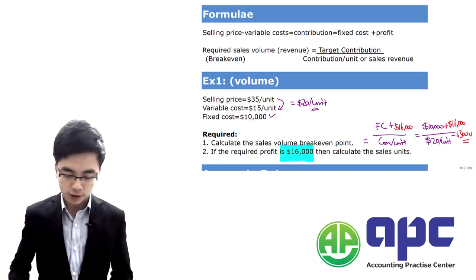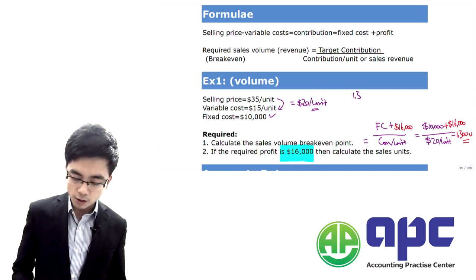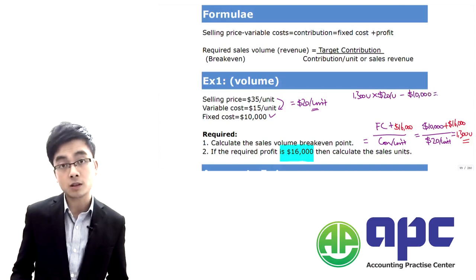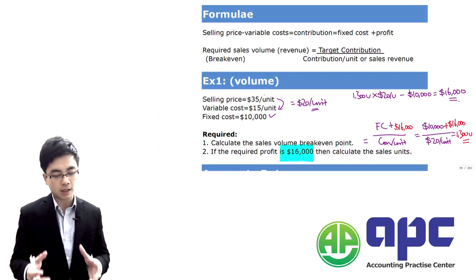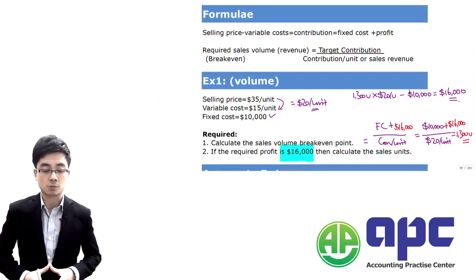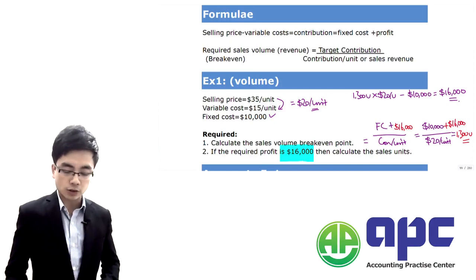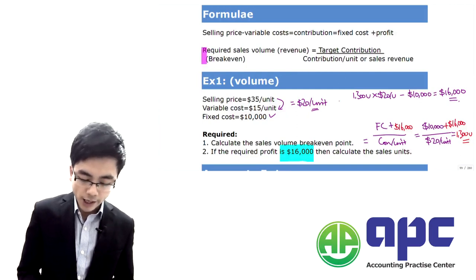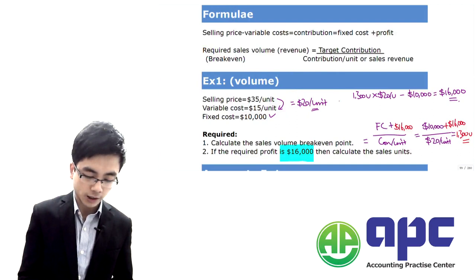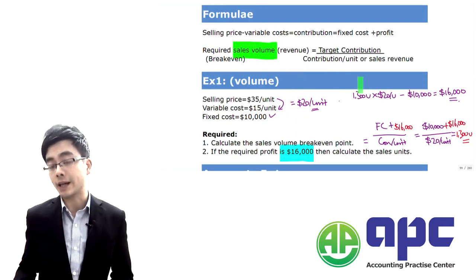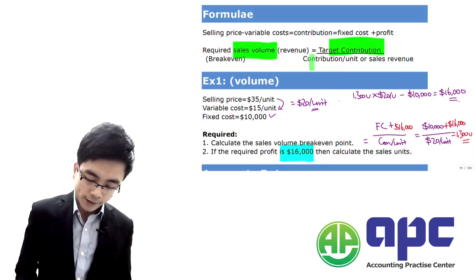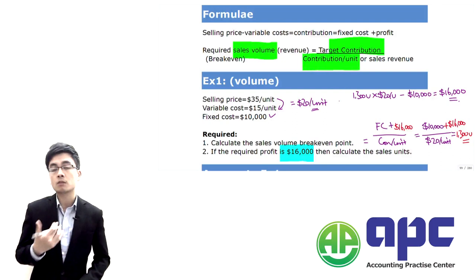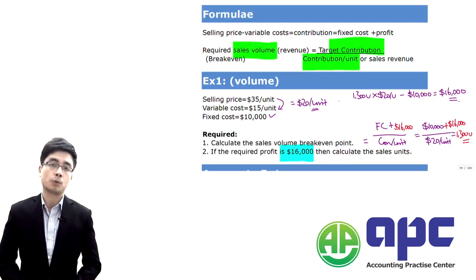To verify: 1,300 units times $20 per unit contribution, minus $10,000 fixed costs, equals $16,000 profit. The formula for required sales volume in units is: (fixed costs plus target profit) divided by contribution per unit, giving the number of units needed to reach break-even or a target profit.